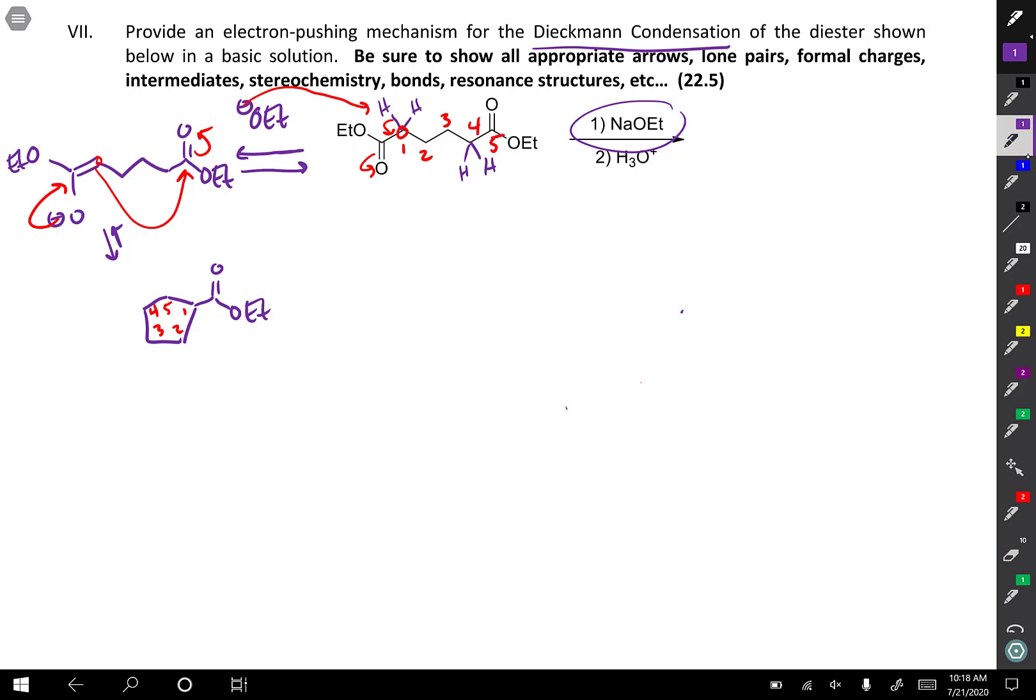On carbon five, we know we attacked it. That means we have an O minus, and then we also have this OEt. Under basic conditions, for the next step, we know that OEt can act as a good leaving group. We're under strongly basic conditions. That means that I can make that group leave, and here I have my final product.